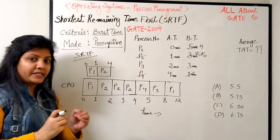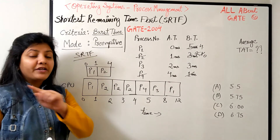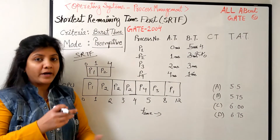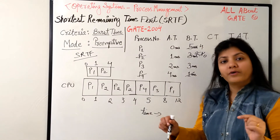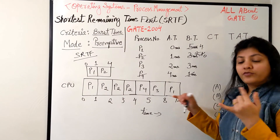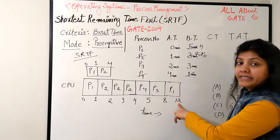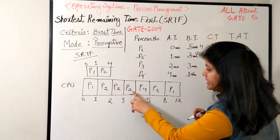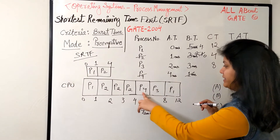If you want to understand more in detail, you should practice the same question with SJF in non-preemptive mode so you can see the difference. Now the question asks for average turnaround time. Let's find the completion time. You have to be careful because P1 is not getting completed early — it gets completed at time 12. P1 completes at 12, P2 completes at time 4, P3 completes at time 8, and P4 completes at time 5.